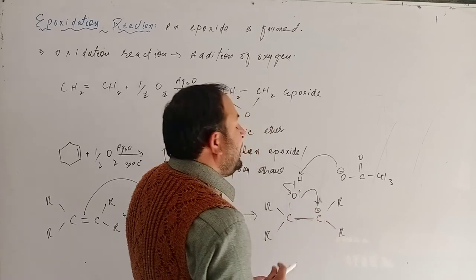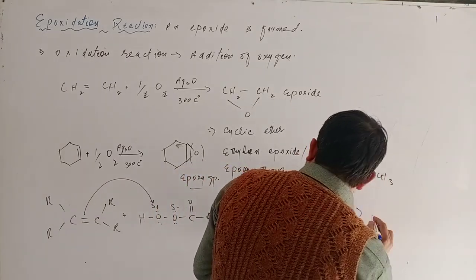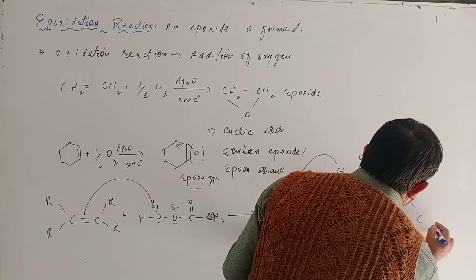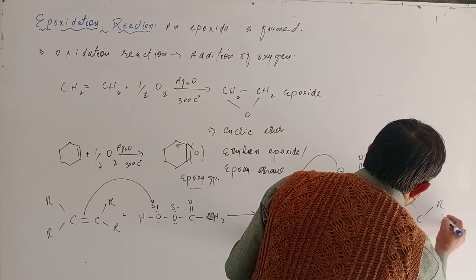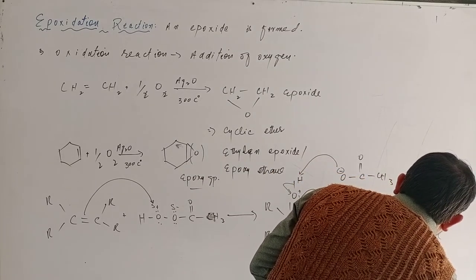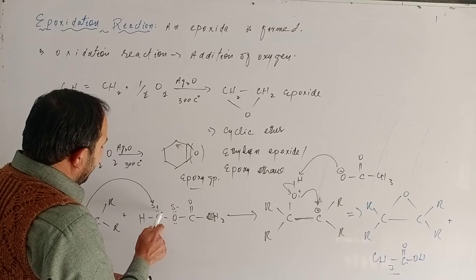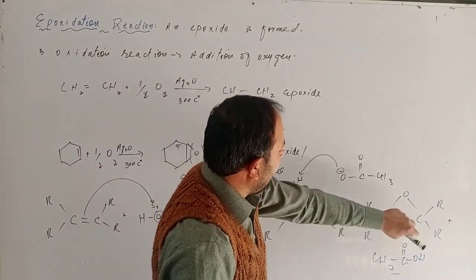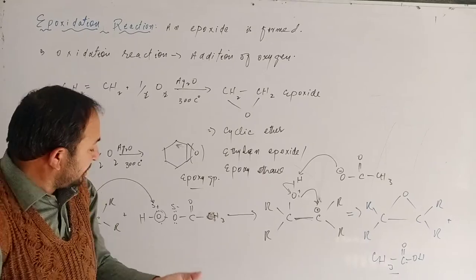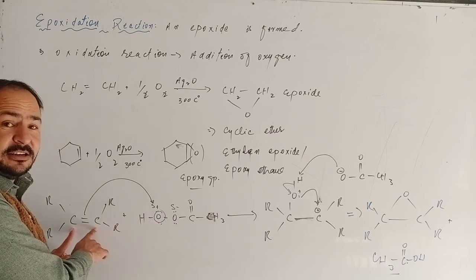So here are the electrons. Oxygen is attached here, and hydrogen is also attached here. It is called the transition state. It is converted into acetic acid, and here the oxygen is attached with the carbon atom — it is added across the double bond.